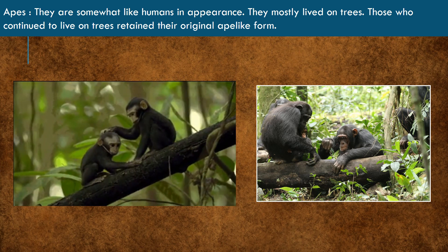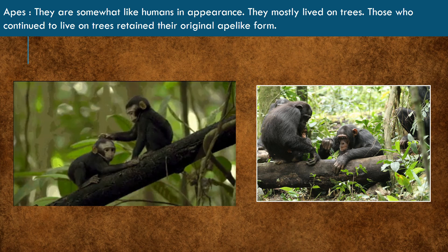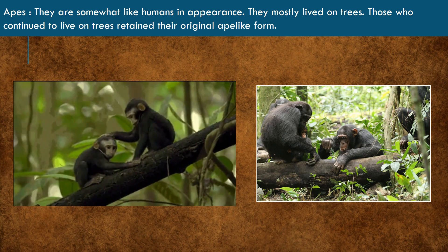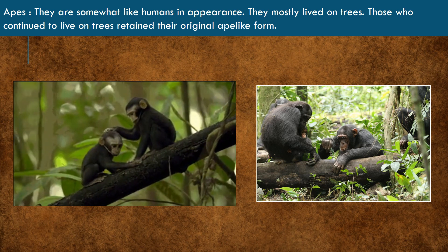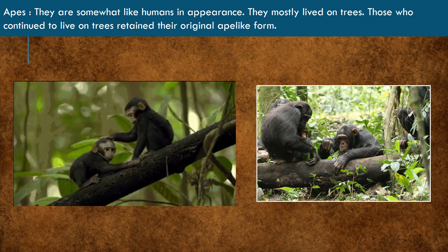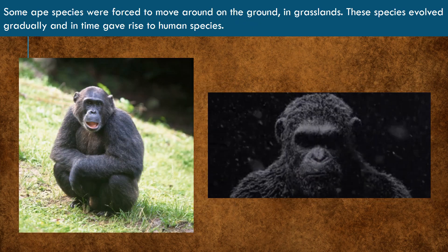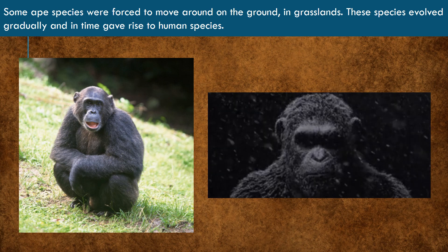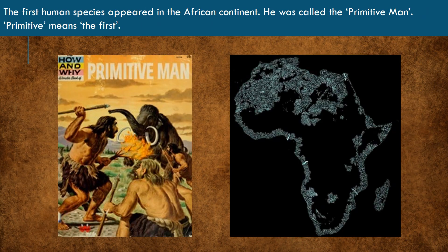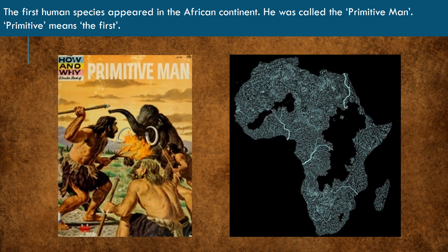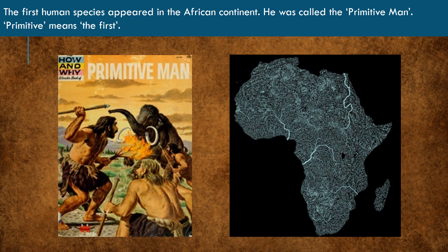Apes were somewhat like humans in appearance. They were intelligent and lived on trees. Those apes who continued to live on trees retained their original ape-like form. They had hair instead of fur and were tailless. Some apes moved on the ground and in grasslands in search of food. These species developed slowly and later gave rise to human species. The first human species appeared in the African continent. He was called the primitive man — primitive meaning the first.